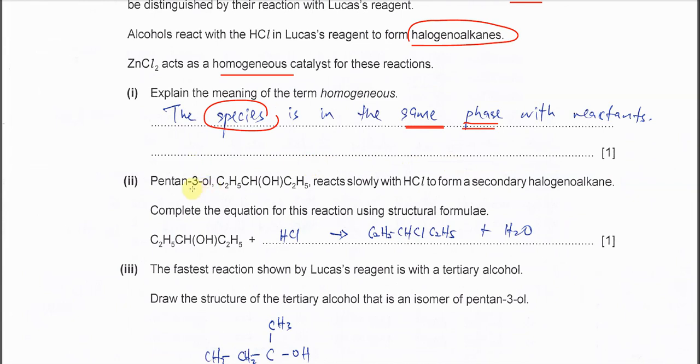Part 2. Pentan-3-ol, this one, reacts slowly with HCl to form a secondary haloalkane. Complete the equations for this reaction using structural formula. This structural formula is already given. You need to substitute this OH with a chlorine. That's all. So you're going to put this pentan-3-ol plus HCl forms C2H5-CHCl-C2H5 plus water. Do not forget this one H2O. Because OH here combined with H here forms H2O, and the chlorine will substitute the OH.